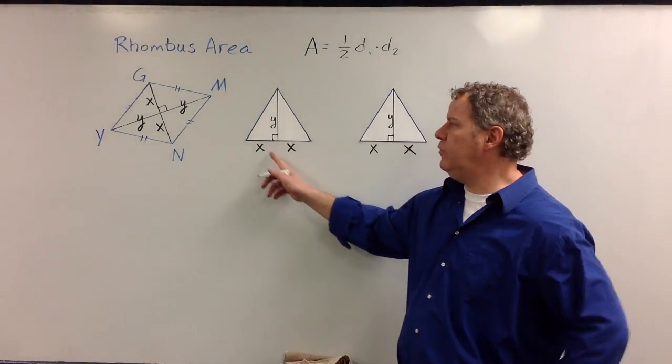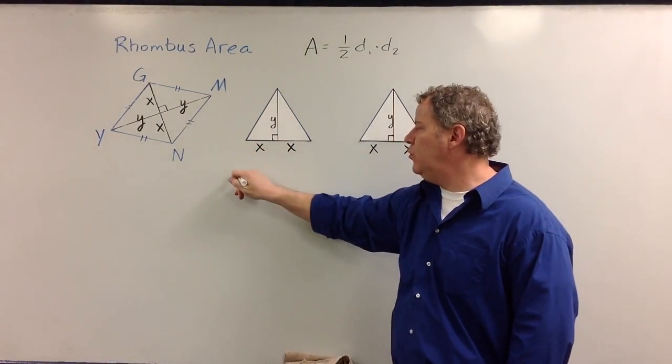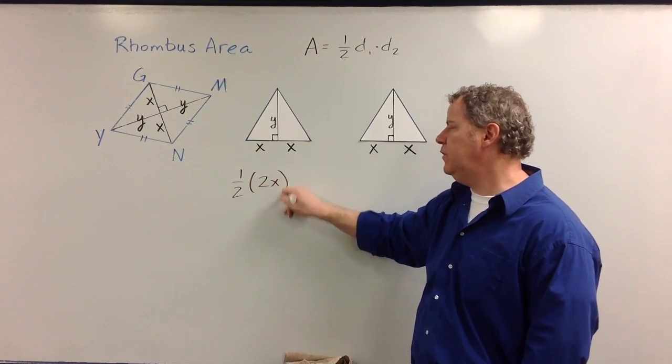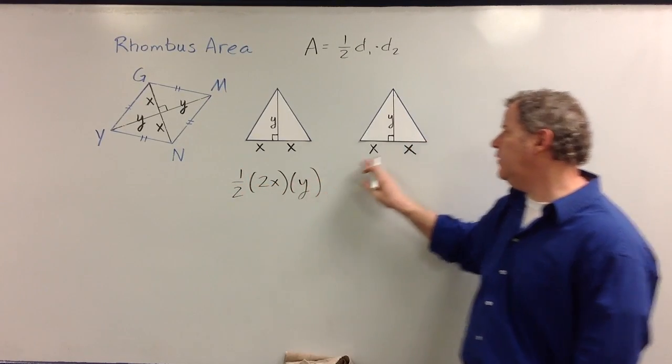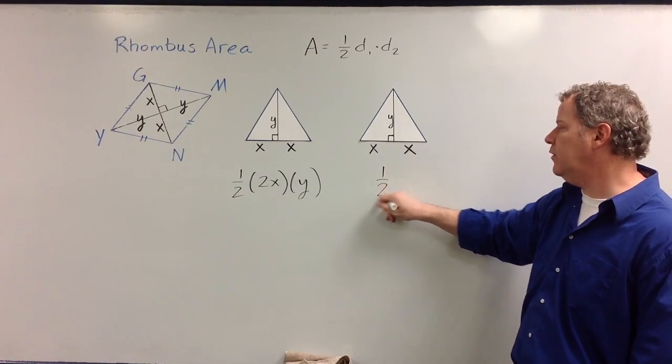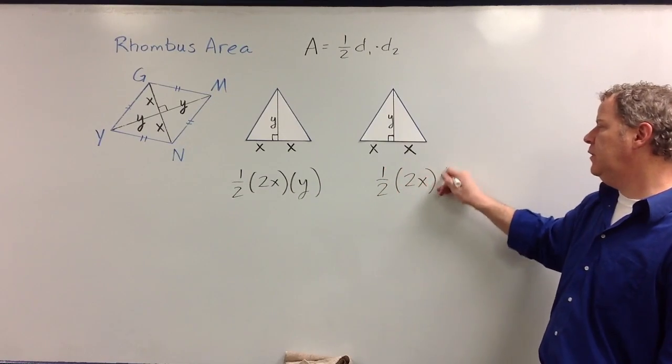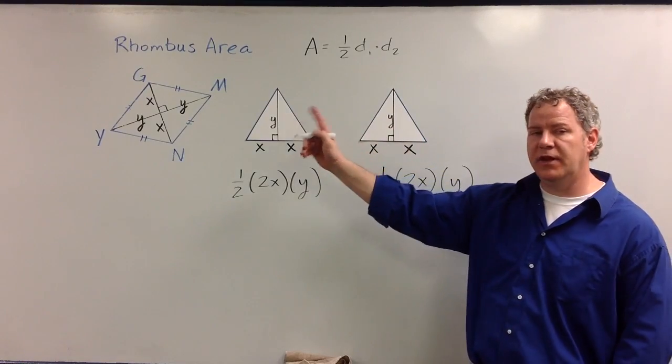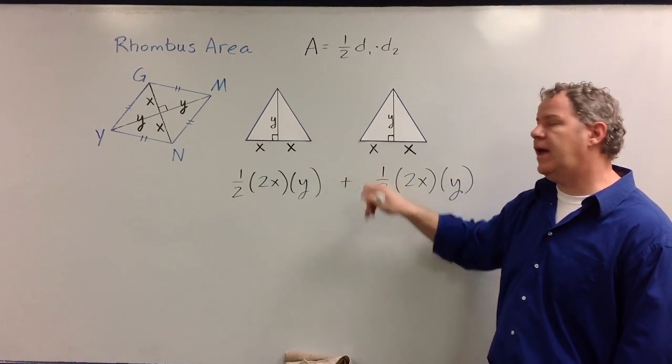The area of this triangle that I took from half of this figure would be one half, the base, which is two x's, times the height, and the area for this triangle would be the same thing, half of the base times the height. And since we want to combine these two triangles together to get that entire rhombus, we would add those together.